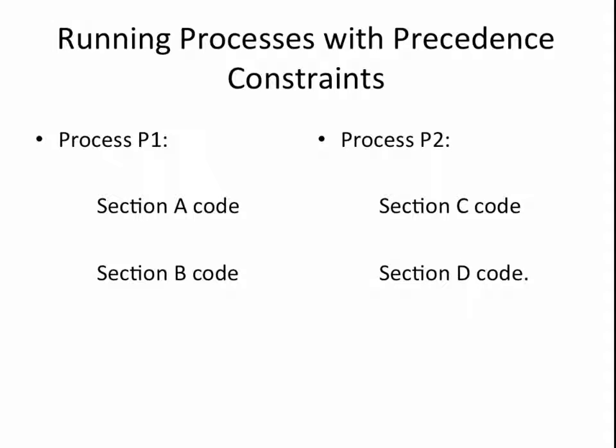Within each process, execution proceeds sequentially, so we are guaranteed that A will always precede B and C will always precede D. Let's also assume that there is no looping and that each process runs exactly once. We want to consider how we can make use of different semaphores to ensure any necessary precedence constraints in the code.